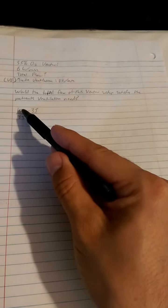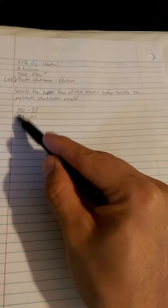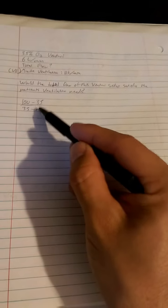First part of this question, we need to determine what the total flow is on the setup right here. Just like we did before, 100 minus 35 over 35 minus 21. So don't forget, this is oxygen minus the entrainment percentage there, and then the percentage of that venturi mask minus the amount of oxygen that is in room air.